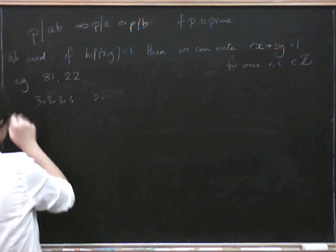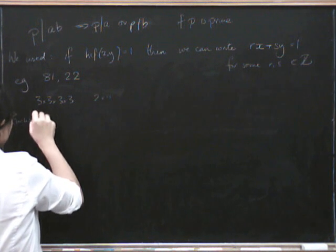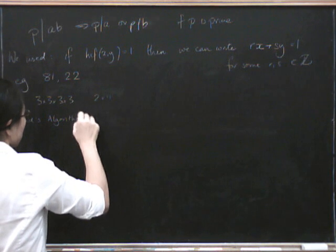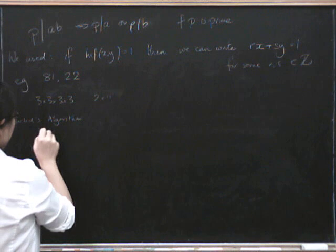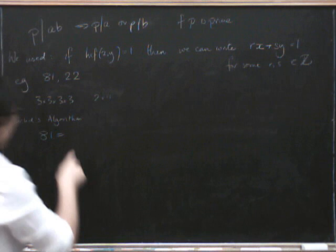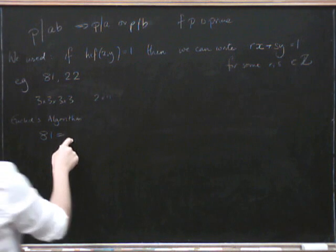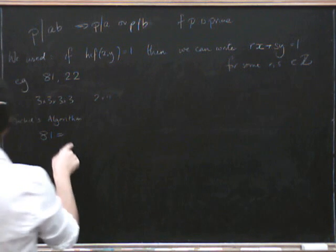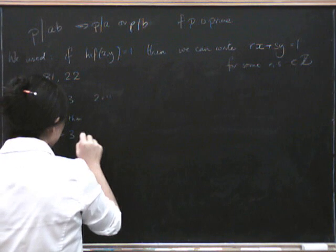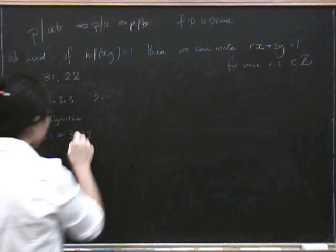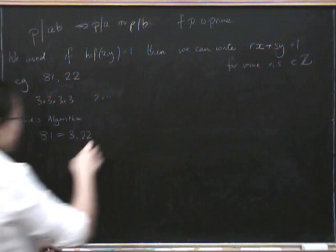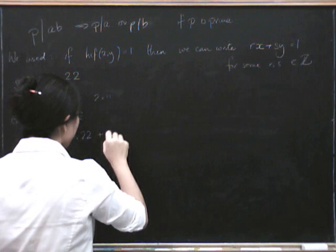So we run Euclid's algorithm forwards. So we first do 81, and we do division with remainder by 22. Well, we can get three 22s in there, right? Because we can get ourselves up to 66. So that's three 22s. And then how many are left over after we've got this 66? Well, 76, that's 15. 15 left over.